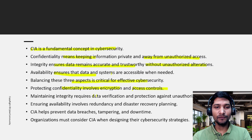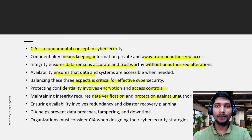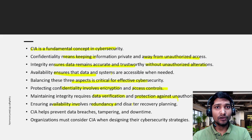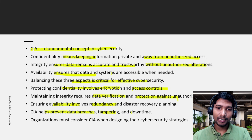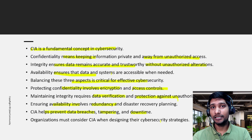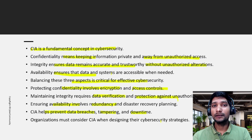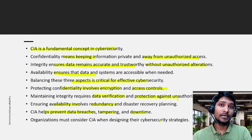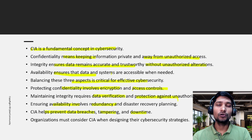Maintaining integrity requires data verification and protection against unauthorized changes — for example, guarding against man-in-the-middle (MITM) attacks. Ensuring availability involves redundancy and disaster recovery planning. The CIA triad helps prevent data breaches, tampering, and downtime. Organizations must consider CIA when designing their cybersecurity strategy, and anyone in cybersecurity must be aware of why CIA is important — it is a critical part of maintaining confidentiality, integrity, and availability.